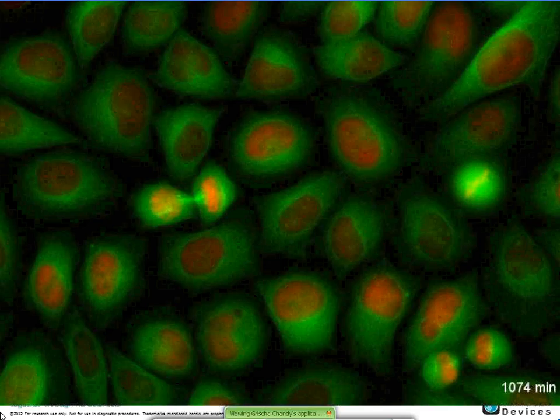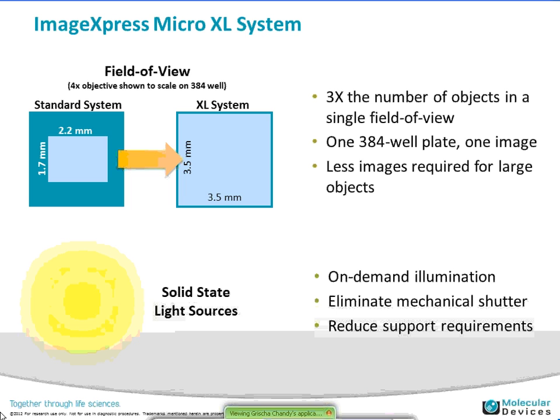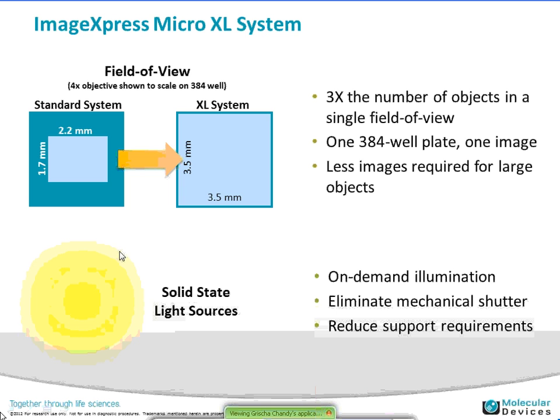One of the things that's new with the ImageExpress Micro is the XL model, which has a camera that gives you a much larger field of view. On a standard CCD system, the left shows a representative 384-well plate with the field of view inside a 4X objective. With the new XL system, you can image larger than a 384-well with a single image at 4X, essentially driving three times the speed because you don't have to stitch as many images.